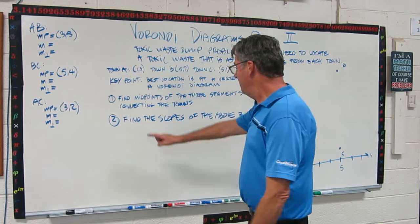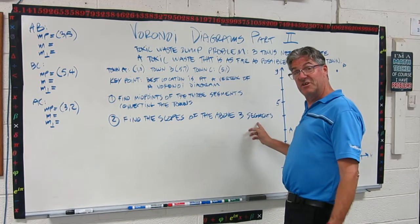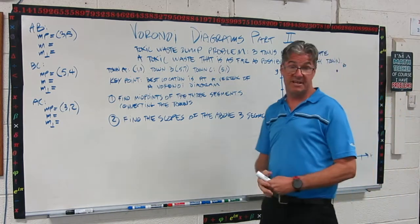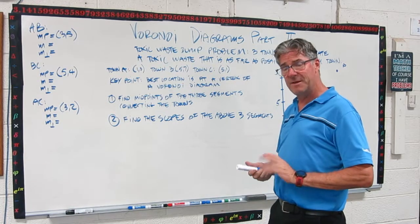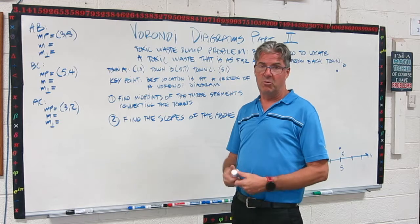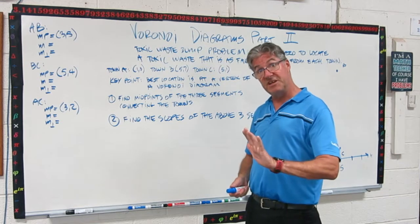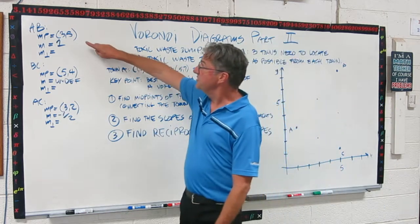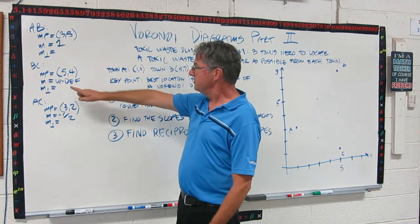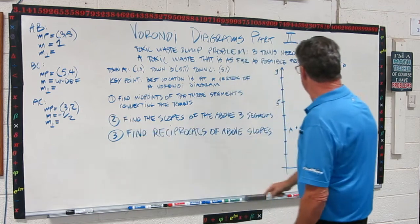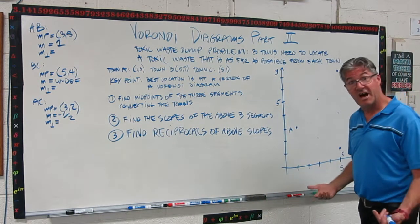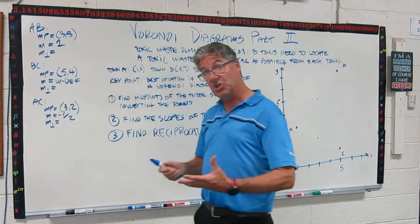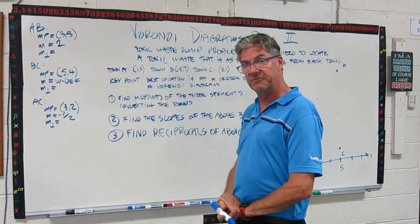If you didn't get those results, look over your calculations and see where you made a mistake. Next step, find the slopes of those three segments. You can do that graphically. You can just look at the graph and count up and over and get your slope that way. That's a nice quick way to do it. It helps if you have graph paper or you can use the slope formula, Y2 minus Y1 over X2 minus X1. So pause the video now and calculate the slopes of the three segments. Here are my results. The slope of segment AB is one. The slope of segment BC is undefined because BC is a vertical line. And then the slope of AC is negative one half.